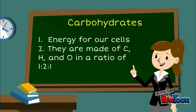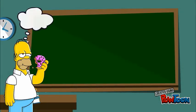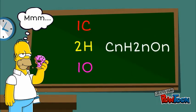Carbohydrates are energy for our cells. They are made of carbon, hydrogen, and oxygen in a ratio of 1, 2, and 1. In other words, for each carbon atom there are 2 hydrogen atoms and 1 oxygen atom.